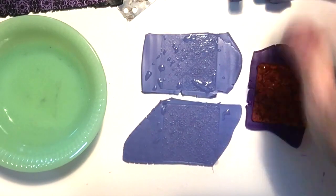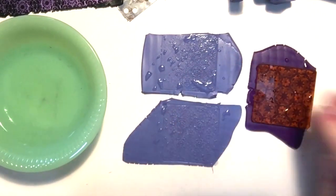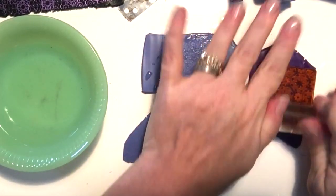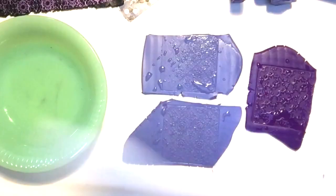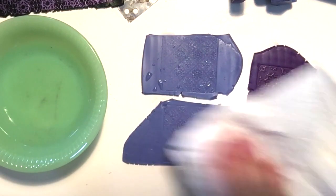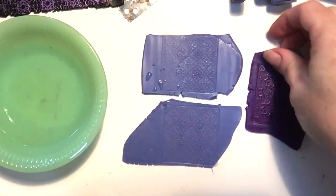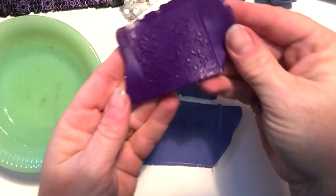I used one deco disc for the two periwinkle pieces that I'm making and a different one for the purple piece. I'm going to blot off any excess water and you can see that gorgeous texture.